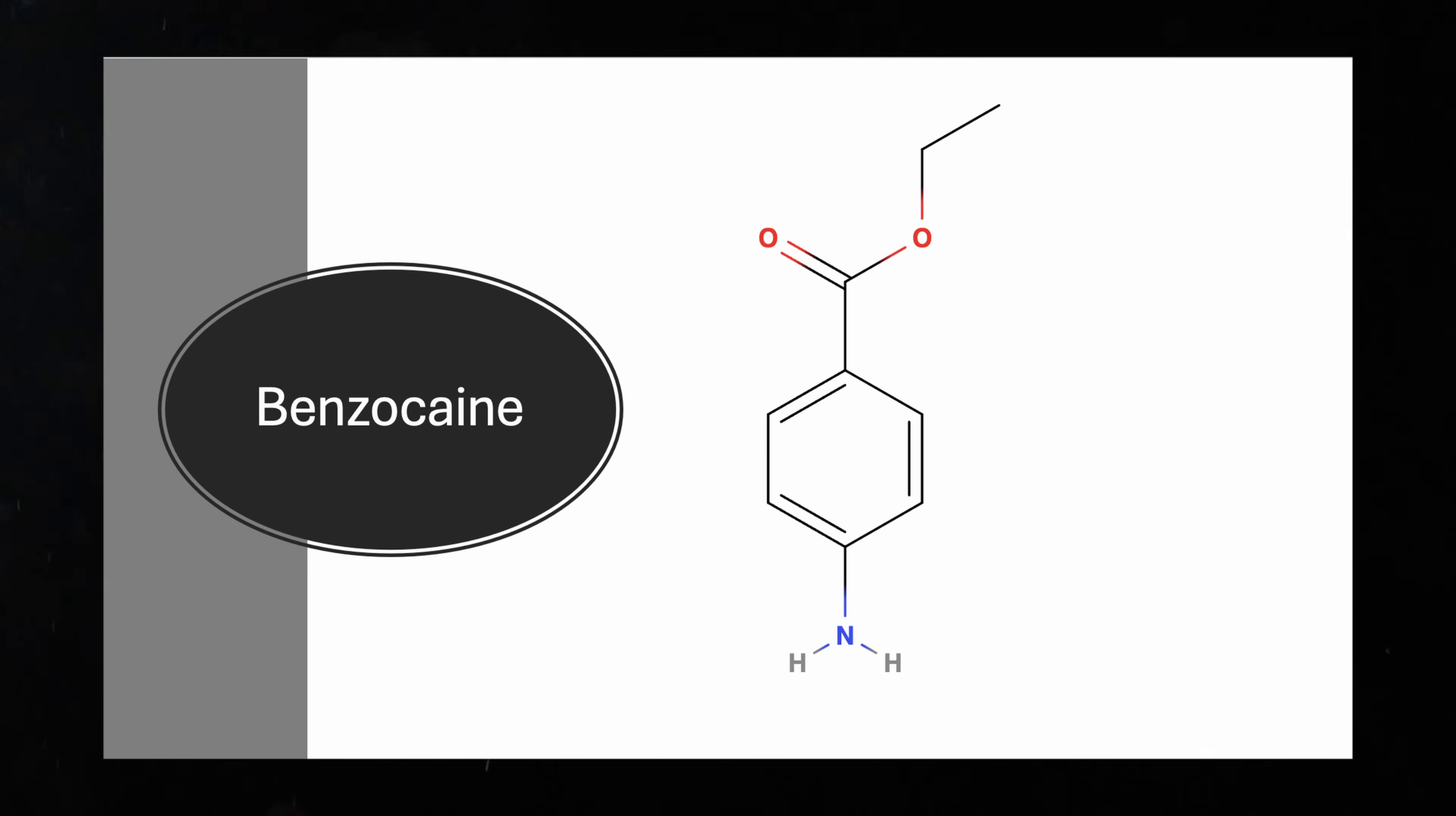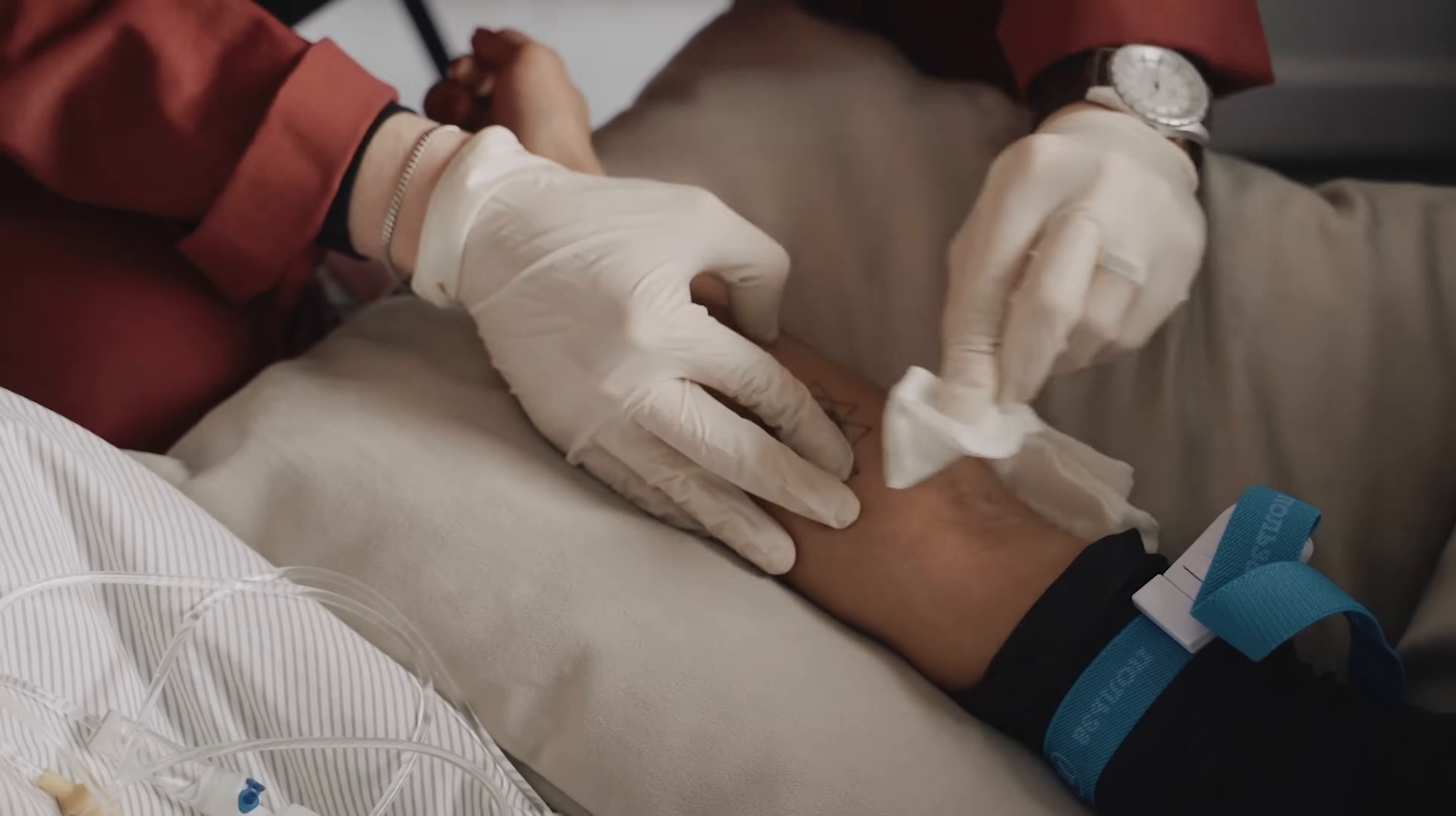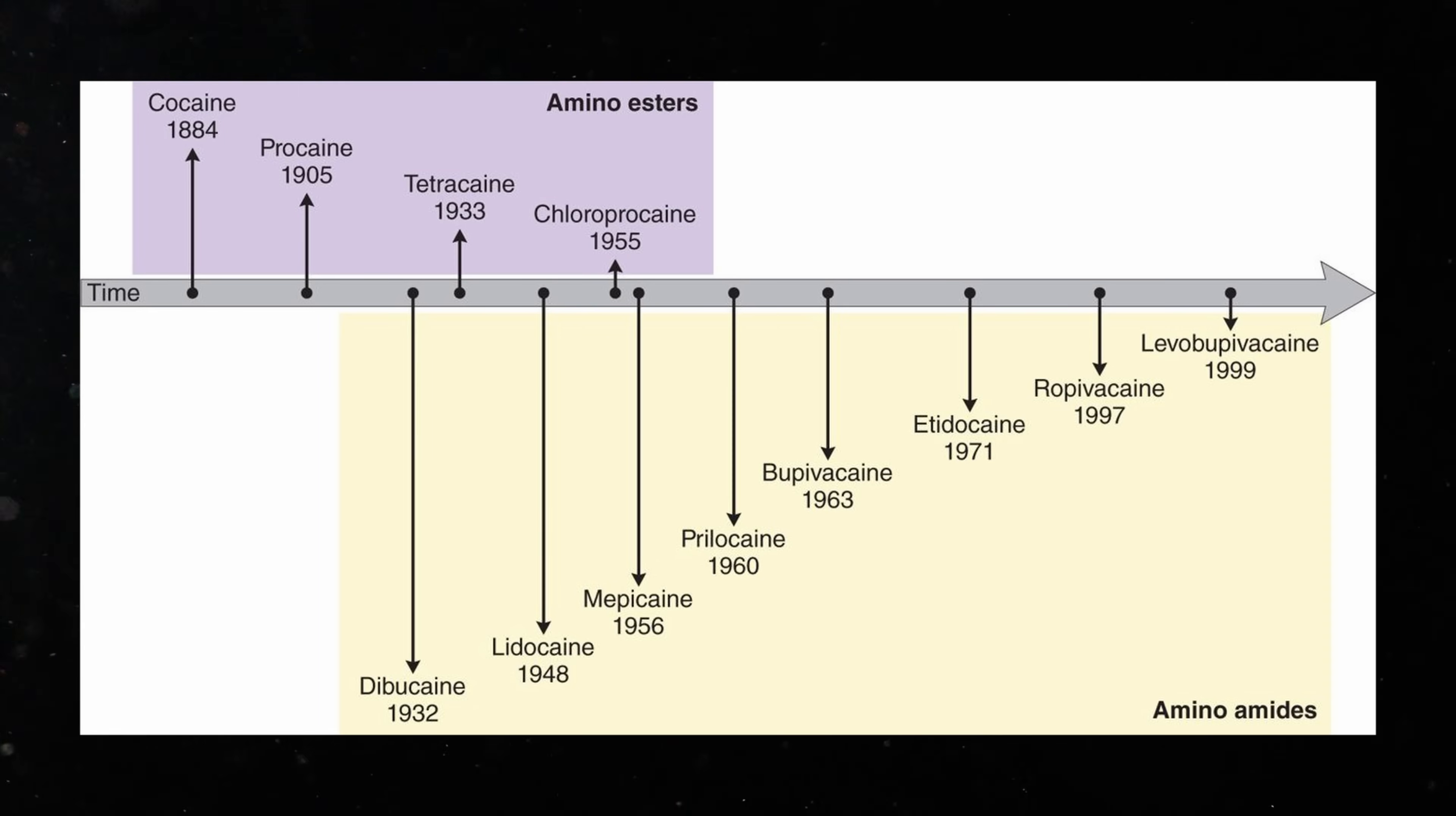Chemists knew they could do better. In 1890, German scientist Edward Ritzert introduced benzocaine, the first synthetic local anesthetic that offered the numbing power of cocaine without the addictive high or severe toxicity. Unlike cocaine, benzocaine was designed to stay where it was needed, working on the surface without racing through the bloodstream and into the brain. It was simpler, safer, and more effective.